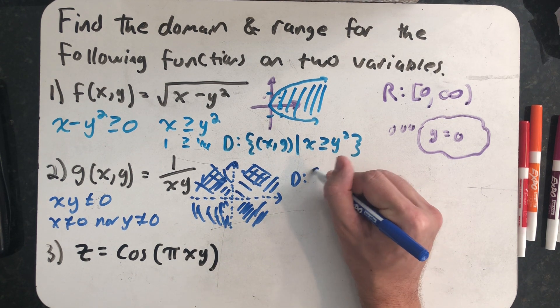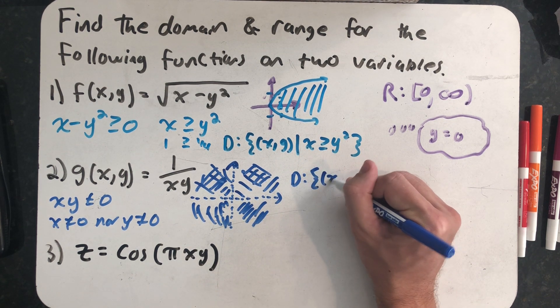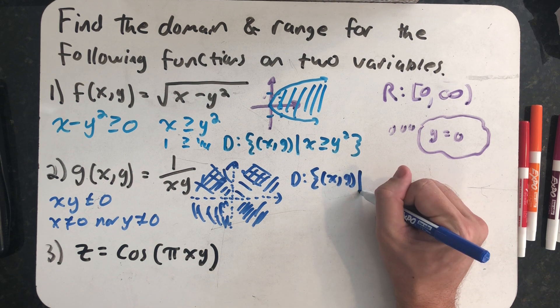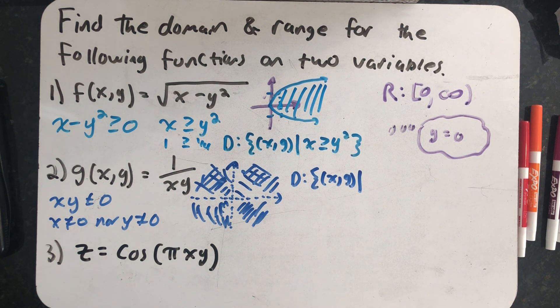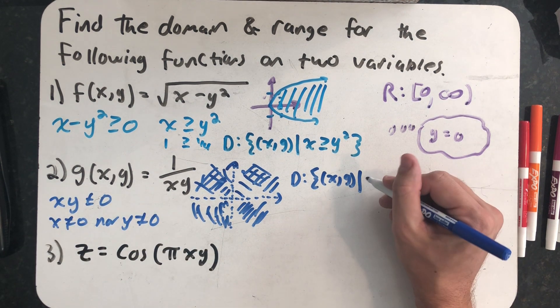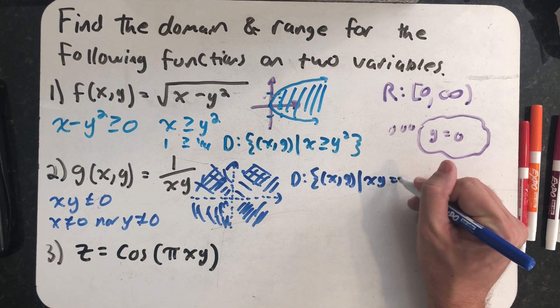So my domain, all the ordered pairs in the plane. That mistake students make a lot where they want to say things like all real numbers for these domains, but they're sets of points in the plane. So all the points in the plane so that x times y is not zero.